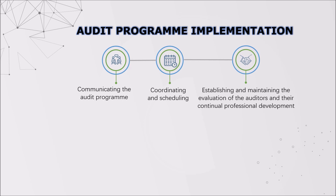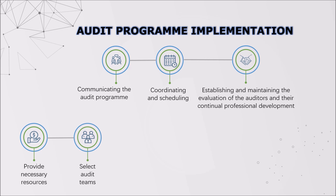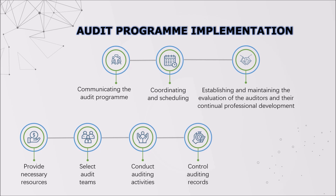After that, we establish and maintain the evaluation of the auditors and their continual professional development. On the second stage of audit program implementation, we provide the necessary resources and select audit teams, and then conduct the auditing activities and control auditing records. Finally, we will review, approve, and distribute our audit reports.